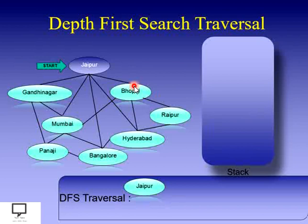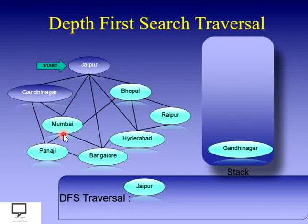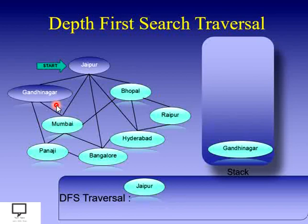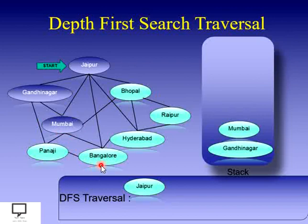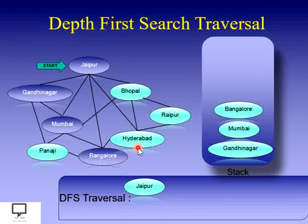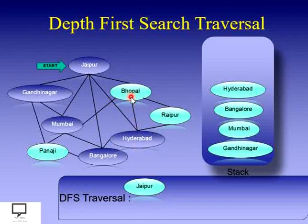We push Gandhinagar onto the stack and mark it as visited. If we do not mark it as visited, we could push that vertex again, which is not allowed by the algorithm. So marking a vertex as visited after pushing is mandatory. Then we push Mumbai and mark it as visited, push Bangalore and mark it as visited, push Hyderabad and mark it as visited, and finally push Bhopal and mark it as visited.